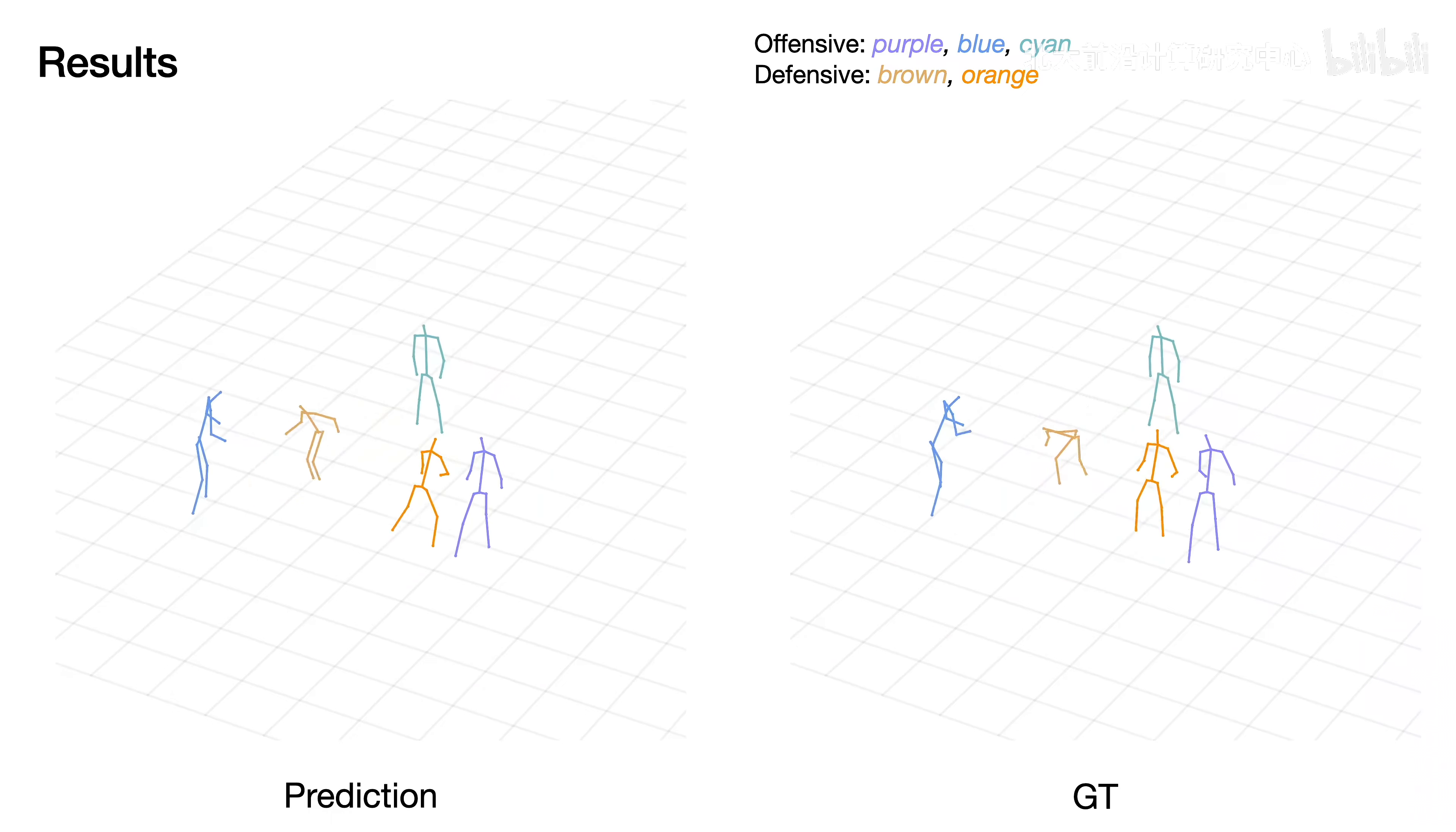Though Player Brown in two videos shows different responses to the passing event, our model precisely perceives the passing move implemented between Player Blue and Purple. Given no future information, Player Brown naturally executes a strategy by approaching Player Blue for a better close-range defense. We consider our prediction results plausible because both our results and ground truth are possible in the real world.